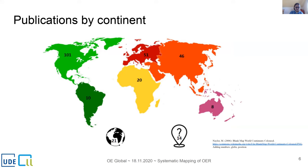The distribution of the studies by continent shows that more than a third of the studies are located in North America, especially the USA. Studies from Europe and Asia follow. In contrast, studies from South America and Africa are less represented. For 14 publications no clear location could be identified, and 21 studies were conducted on more than one continent.